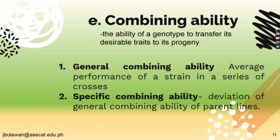For combining ability, it is the ability of a genotype to transfer its desirable traits to its progeny. First, we have general combining ability, which is the average performance of a strain in a series of crosses. Second is specific combining ability, which is the deviation from the general combining ability of the parent lines.